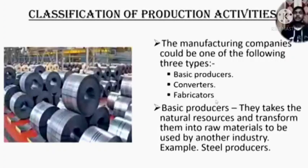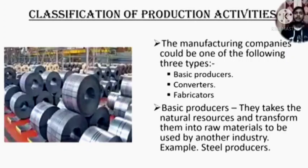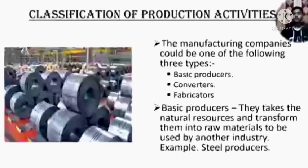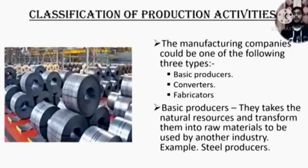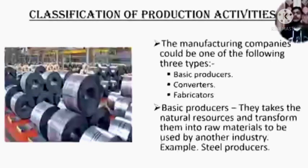Now we will discuss the classification of production activities. The manufacturing companies could be either of three types: basic producers, converters, or fabricators. First of all, basic producers. They take natural resources from nature and transform them into raw material to be used by another industry — for example, steel producers. In this image, we can clearly see they are using natural resources and producing steel.